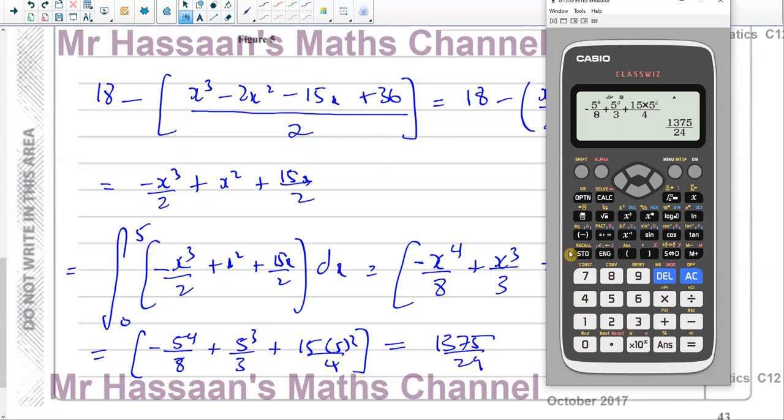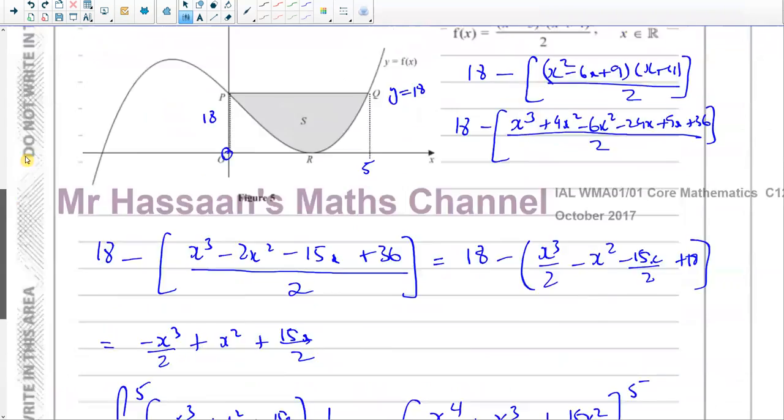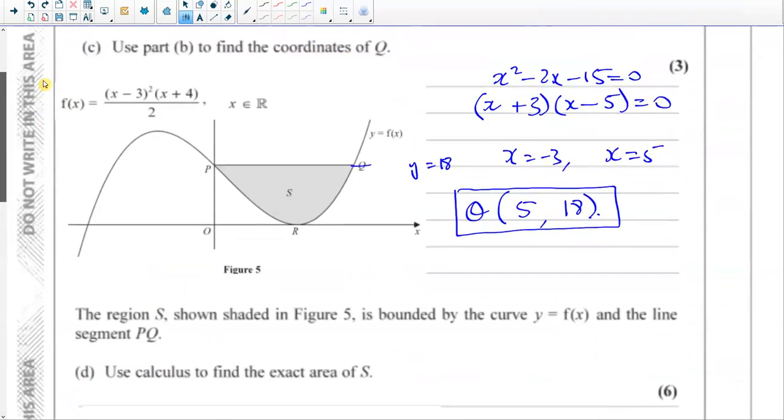1375 over 24. You can leave your answer like that. That's perfectly fine. You could write that as a mixed number if you want, which would be 57 and 7 over 24. So there we have our answer for part D. And that's the answer. That's the end of the question.